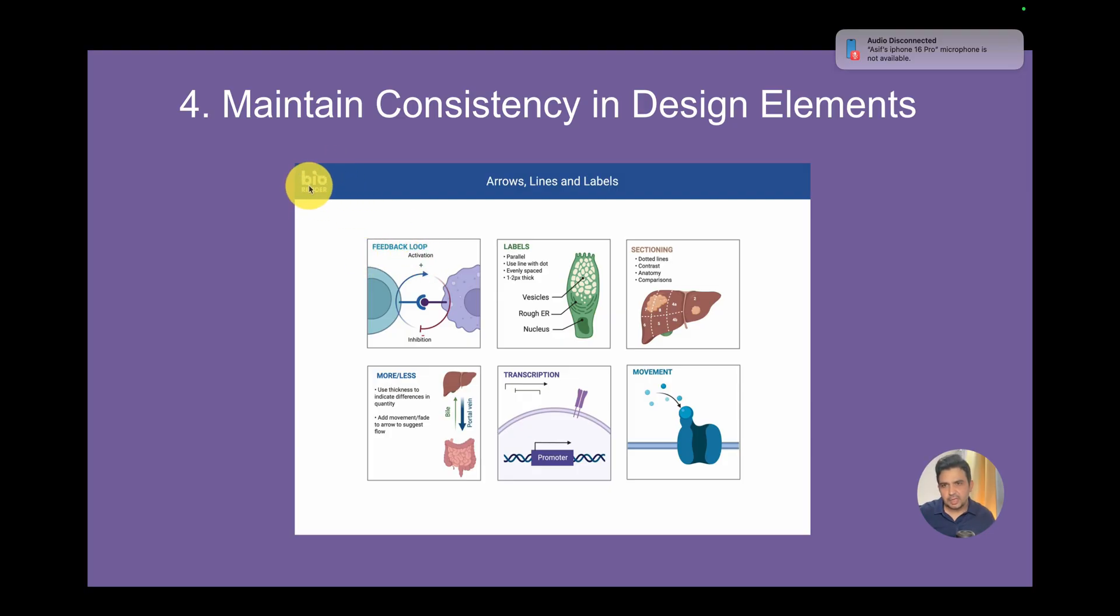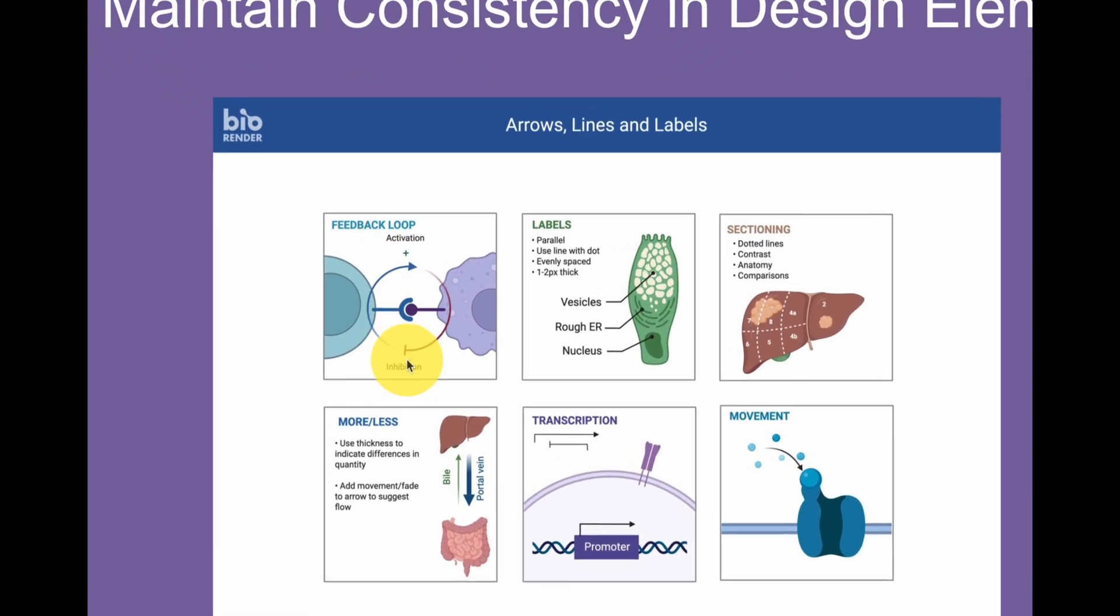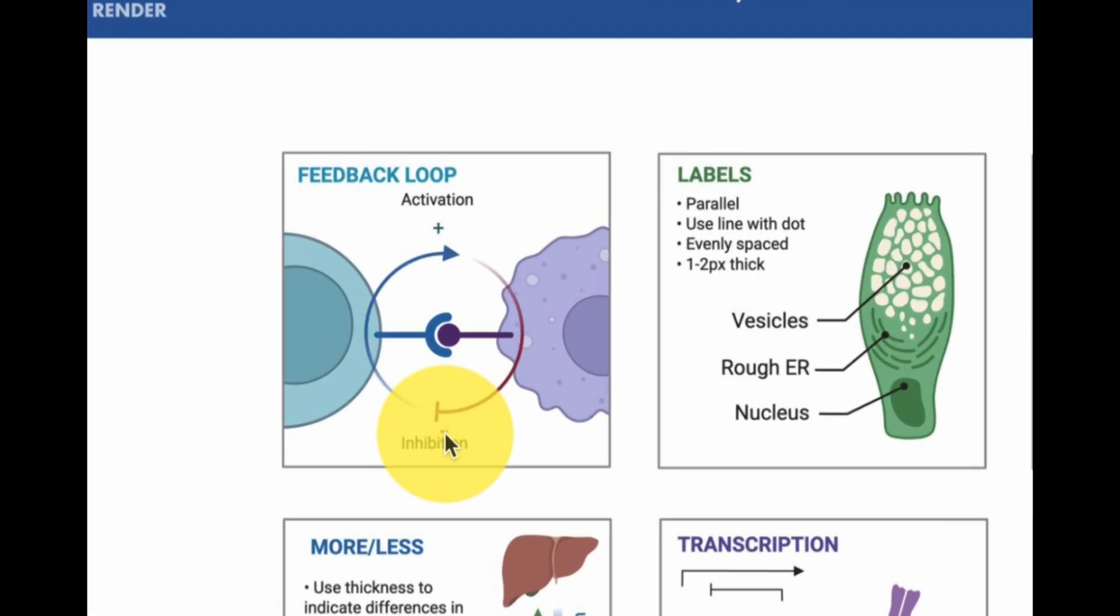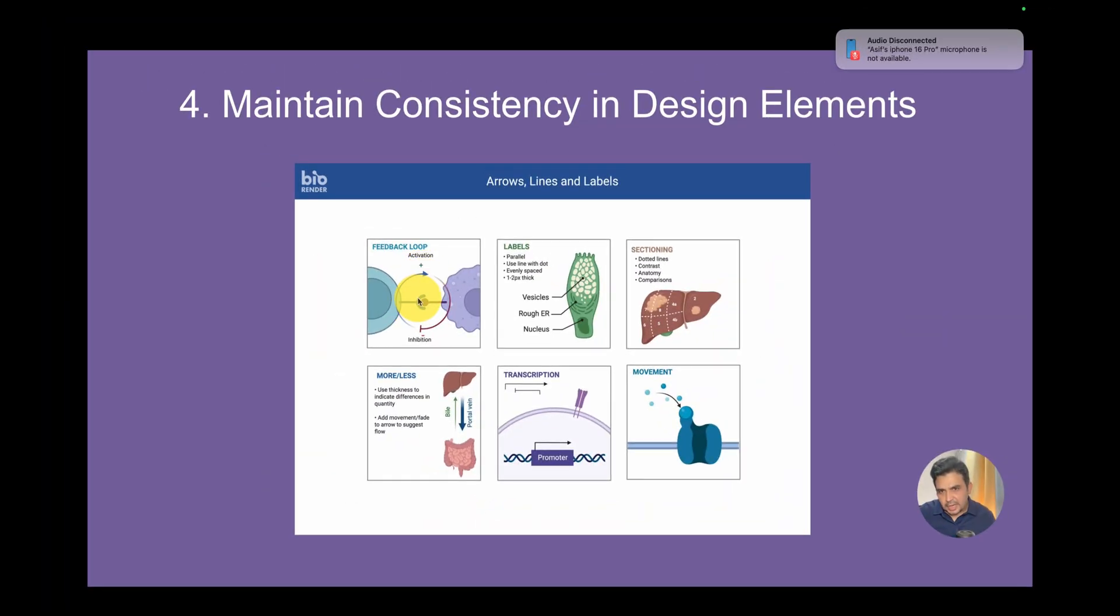Here you can see a feedback loop. I've borrowed this figure from BioRender. If this is a feedback, one is activation and one is inhibition. The activation is in this color, so the arrows show that this color belongs to this. Even without saying a word, this is giving the whole story by standing alone.